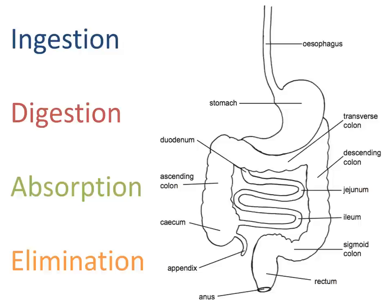The function of the digestive system can be summarized in four relatively straightforward processes: ingestion, digestion, absorption, and elimination. Ingestion refers to taking food and water into the body — this is the process of eating and drinking.